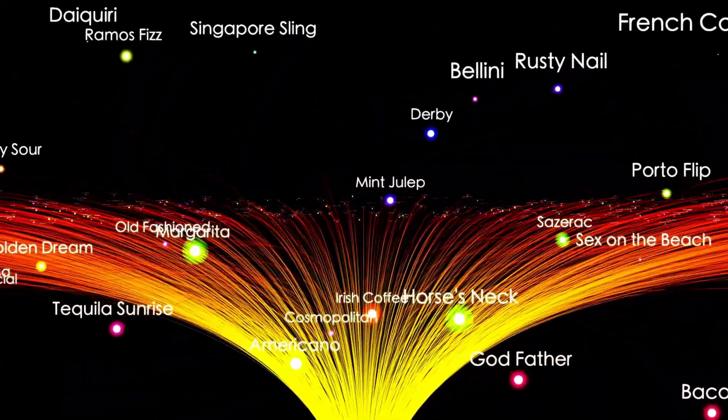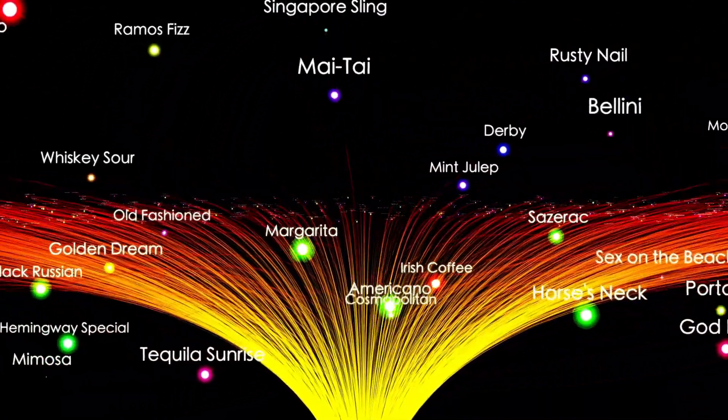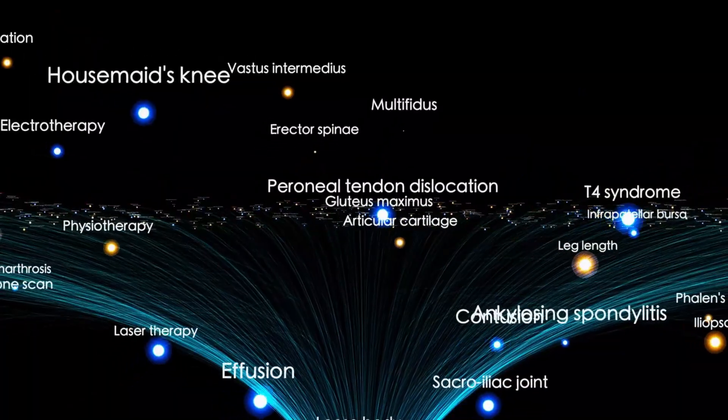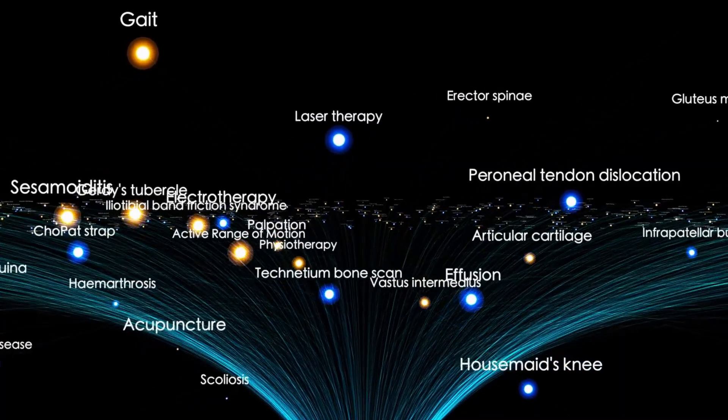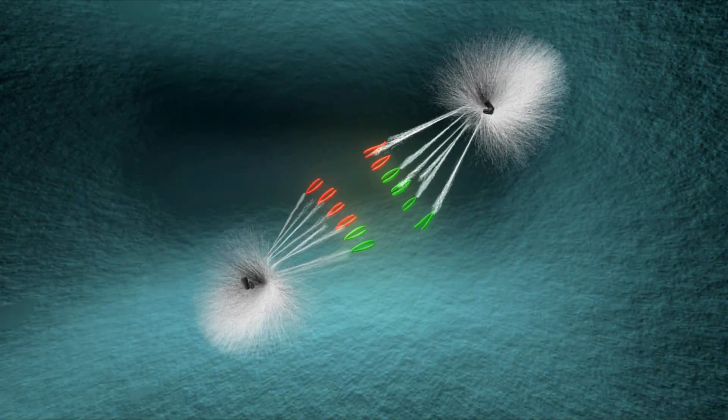Voyager 1 was designed for a mission that was expected to last just five years, yet over four decades later, it continues to transmit data from over 14 billion miles away, the farthest any human-made object has traveled.